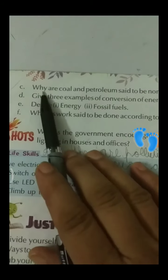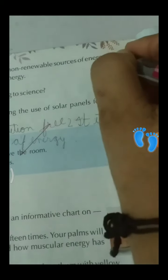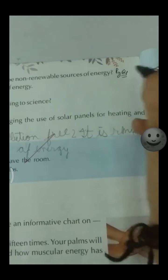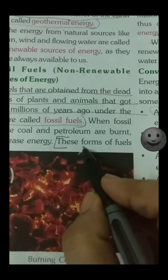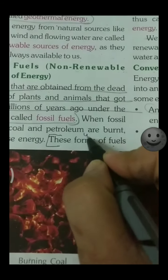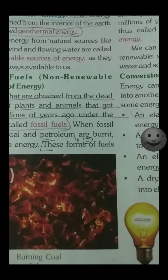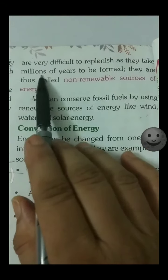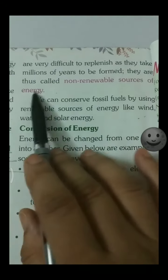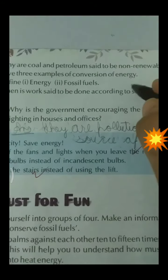Part C: Why are coal and petroleum said to be non-renewable sources of energy? See page number 64. These forms of fuels are very difficult to replenish as they take millions of years to be formed. Therefore they are called non-renewable sources of energy.